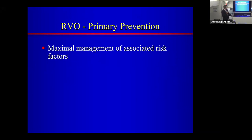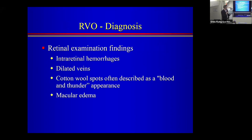Primary prevention is maximum management of associated risk factors. Patients under treatment for hypertension, hypercholesterolemia, and diabetes are in much better shape than if untreated. For diagnosis, it's mainly done on examination: intraretinal hemorrhages, dilated veins, cotton-wool spots, blood in a 'blood and thunder' appearance, and macular edema.